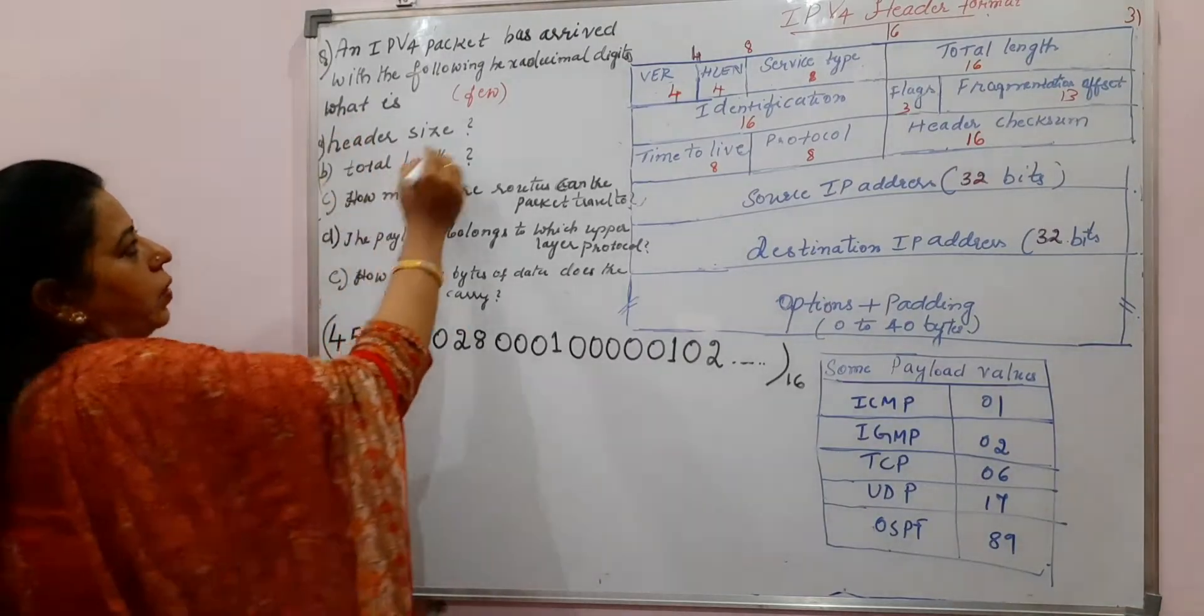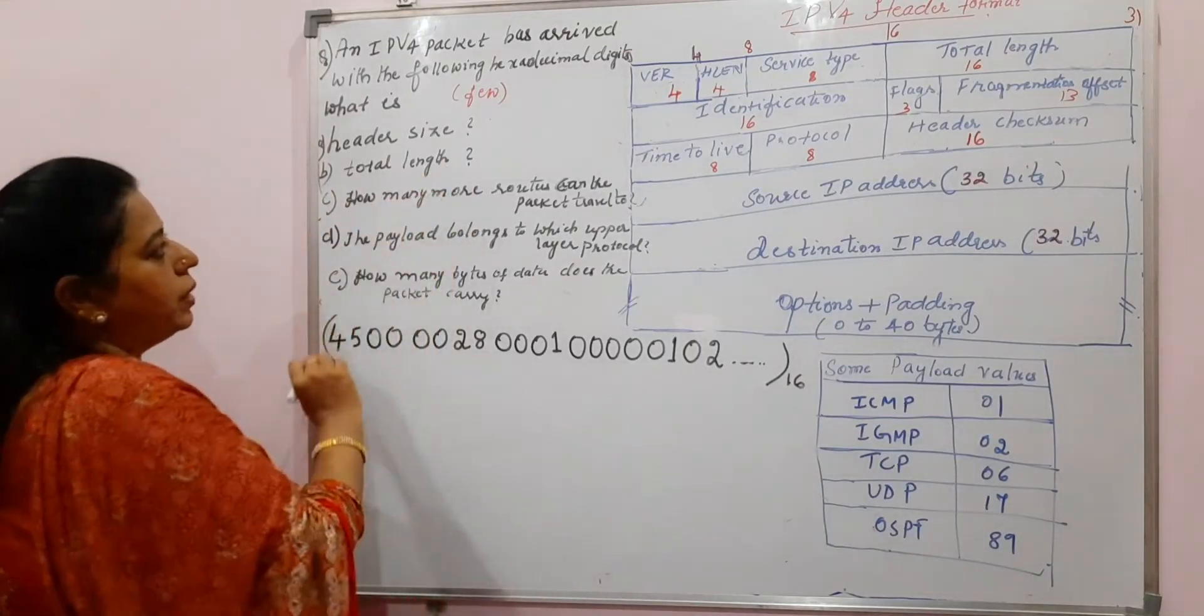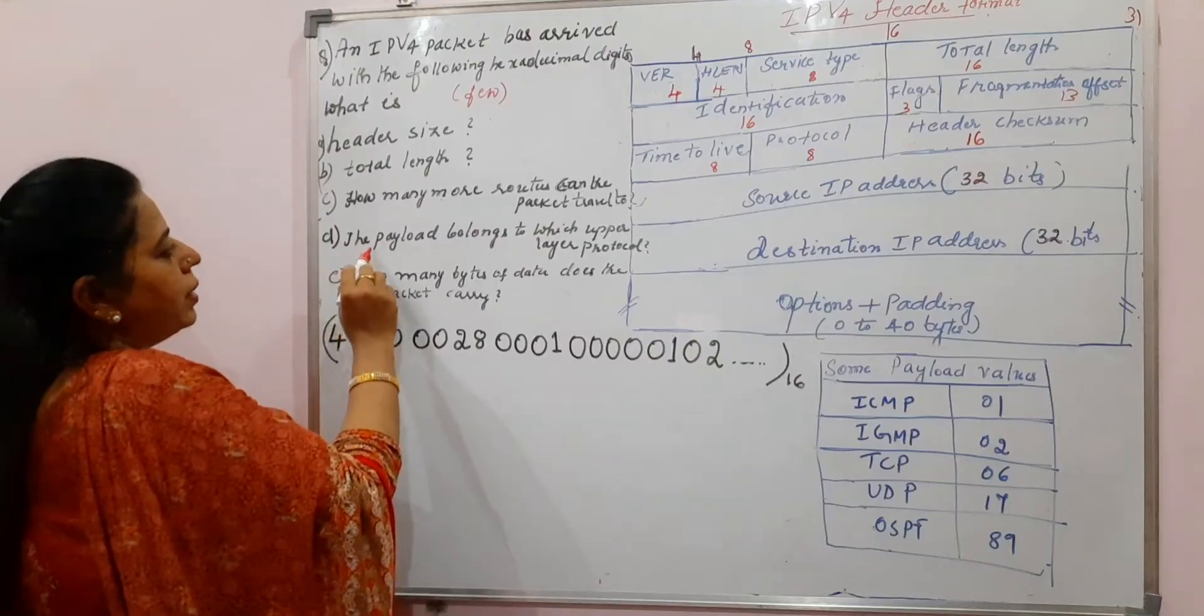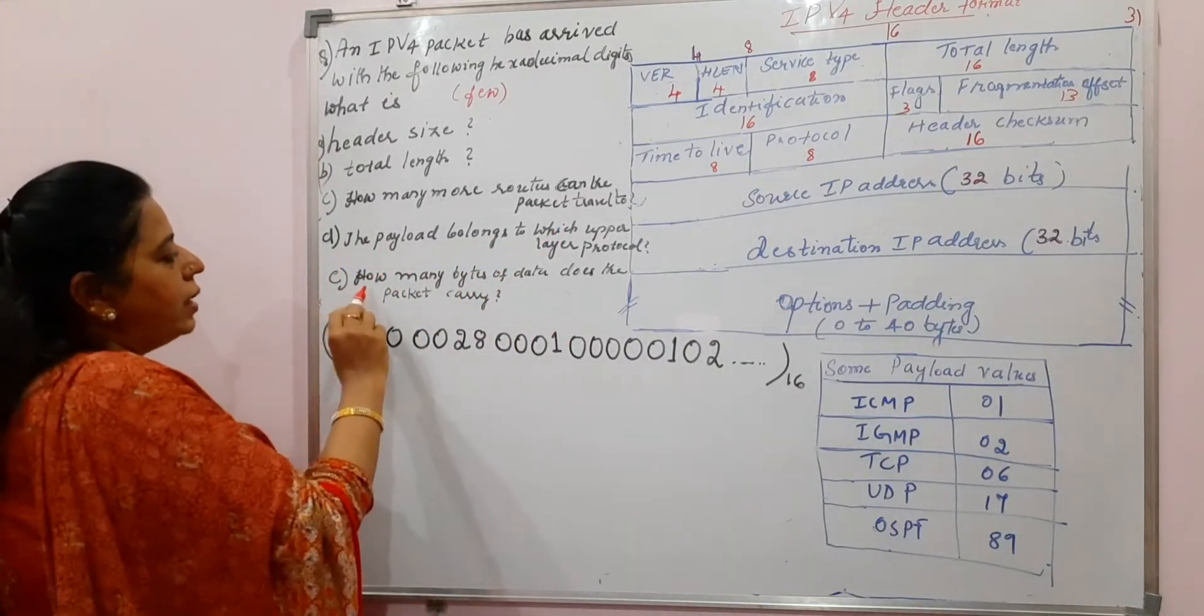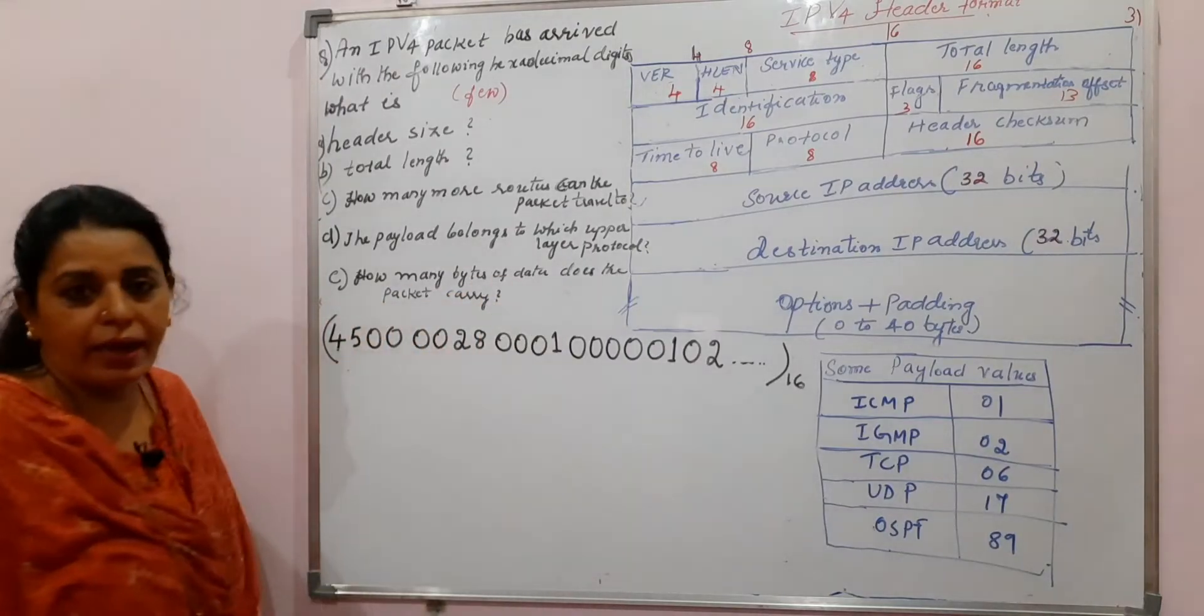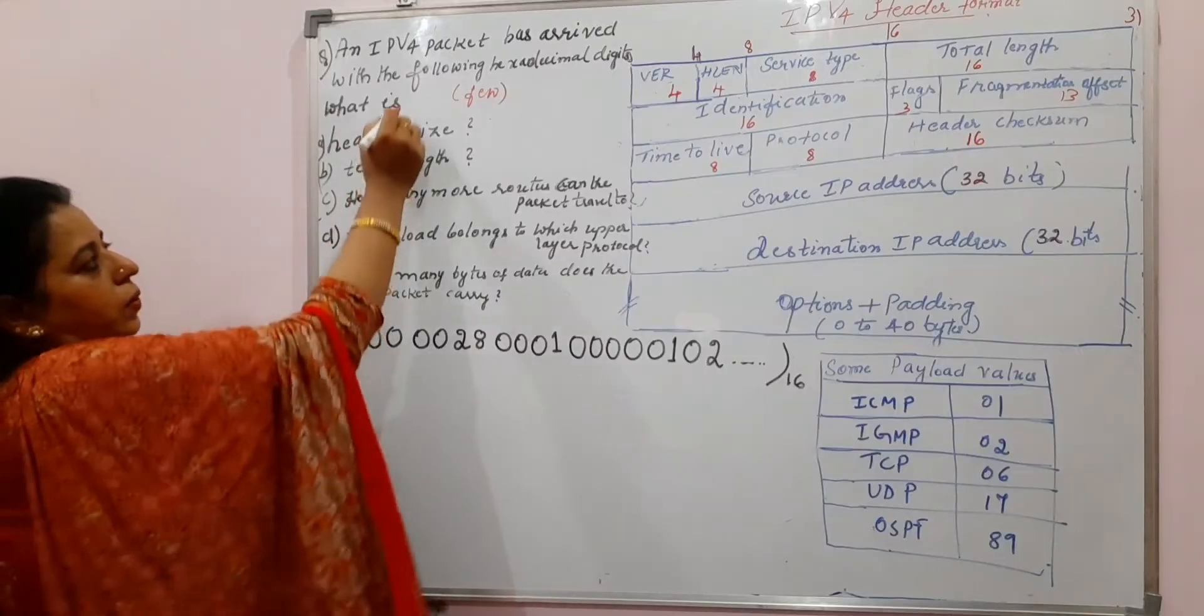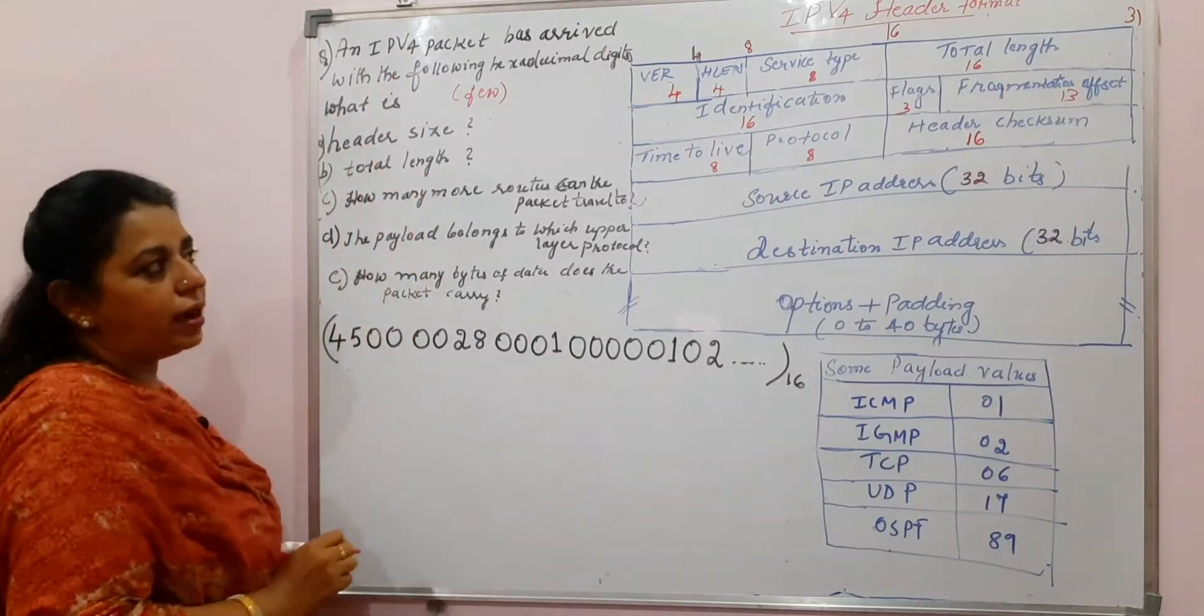You are going to find out what is the header size in that packet, what is the total length, how many more routers the packet can travel to. The fourth part they have asked is the payload belongs to which upper layer protocol. And the last part in the question is how many bytes of data does the packet carry. With this given hexadecimal digits, you are going to give the solution for all these five different questions that are asked.